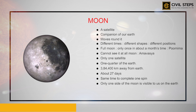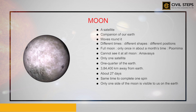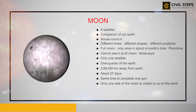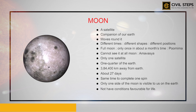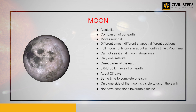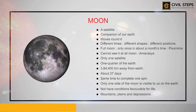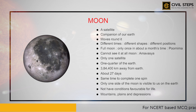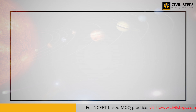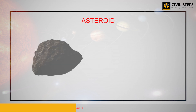Unlike Earth, which has favorable conditions for life, the Moon does not have such favorable conditions. Rather, its surface has mountains, plains, and depressions. After talking about the Moon, we will move to the next concept and discuss asteroids.